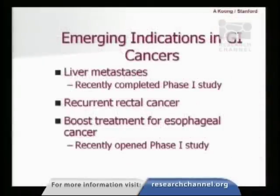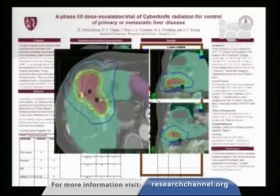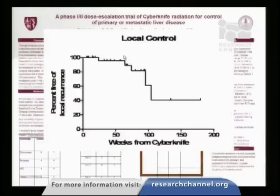Other emerging indications: we started a liver program in 2004 and completed at least one Phase 1 study, with an international cooperative group study looking at liver tumors being opened. We're also considering treatments in rectal cancer and esophageal cancer. Results recently presented at a national meeting showed that in the liver we can actually treat fairly large tumors. These tumors respond very, very quickly and nicely to radiation — both metabolically and clinically — with excellent local control several years even after the radiosurgery is delivered.